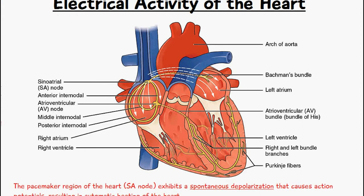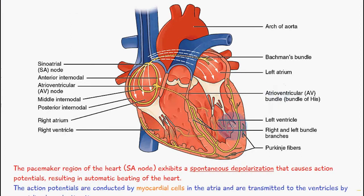We have a diagram here showing the heart and it clearly shows several of the pacemakers of the heart. They include the sinoatrial node, the atrioventricular node, and the Purkinje fibers, which help to spread the action potential to the myocardial cells of the ventricles.